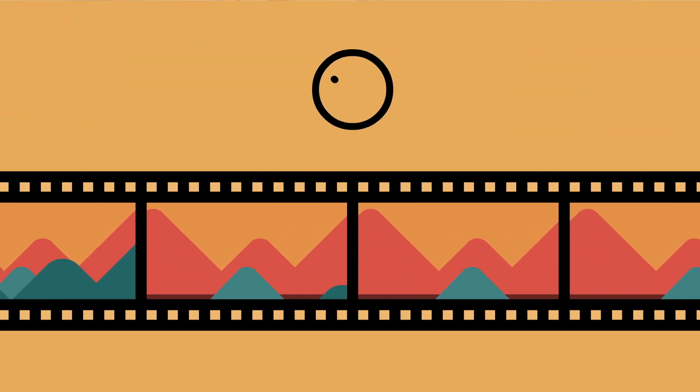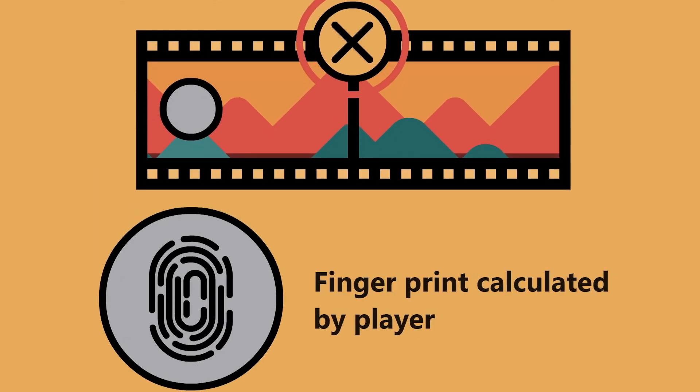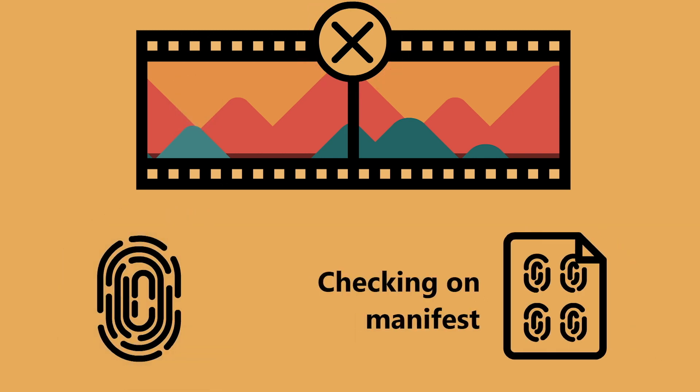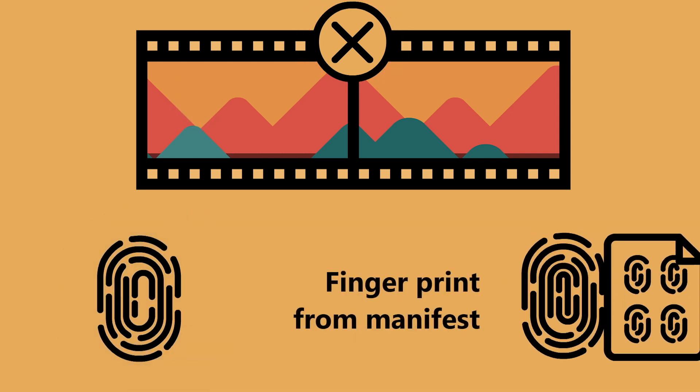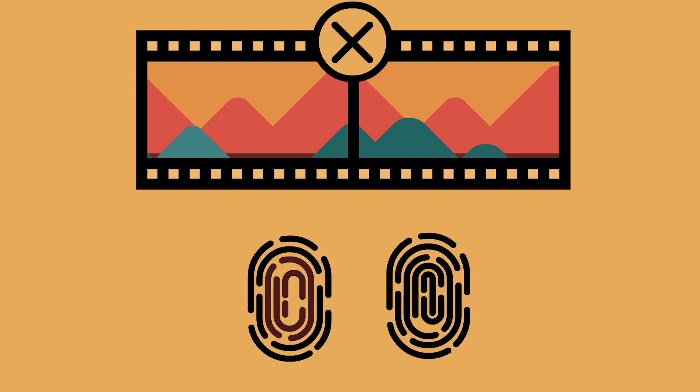The way modern video distribution works is it's progressively transmitted — you don't need to wait for two gigabytes of video to download, you just download a couple of seconds and then your player starts playing. So we need our authentication system to work in the same way. Rather than authenticating the whole video, we have to be able to authenticate a few seconds at a time, making sure our provenance and authentication system works with modern video delivery today.